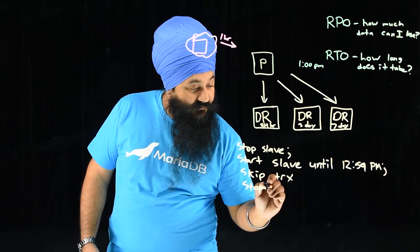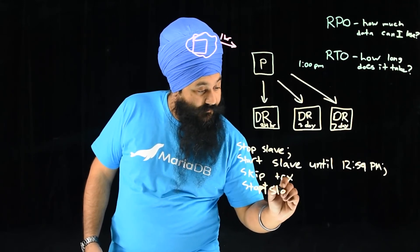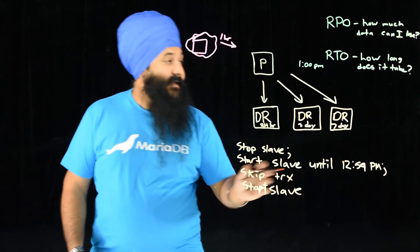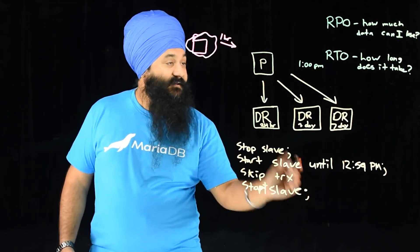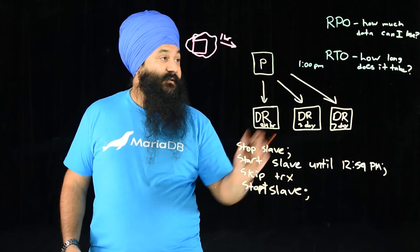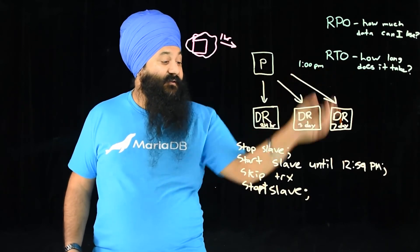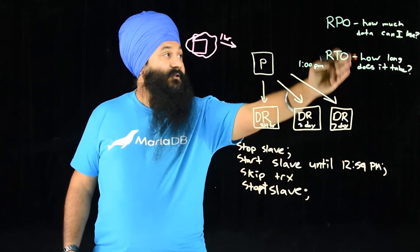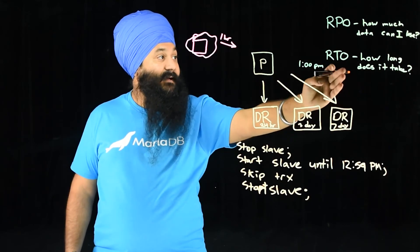And that start slave will go back and start all the way up until now. So let's say it's like 5 PM. Now it will actually do everything from after the drop until 5 PM. Now you've lost no data. You have that table back.